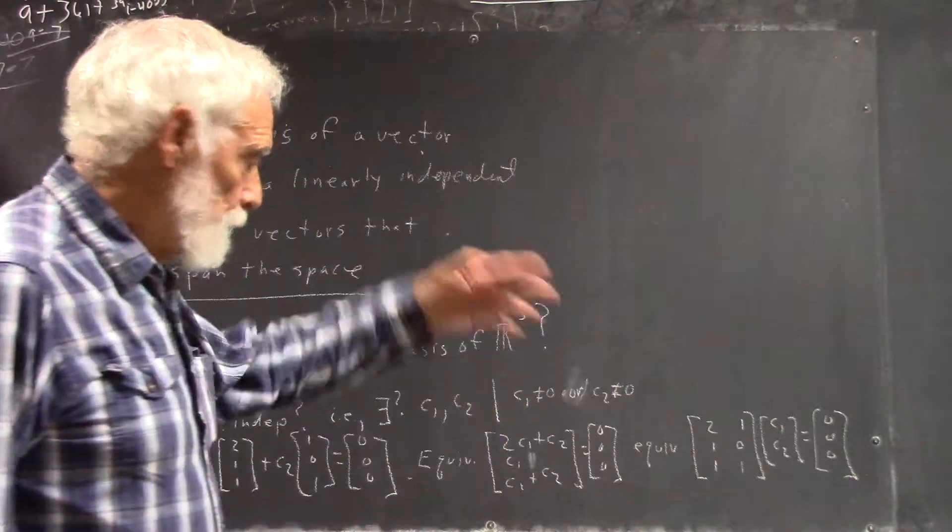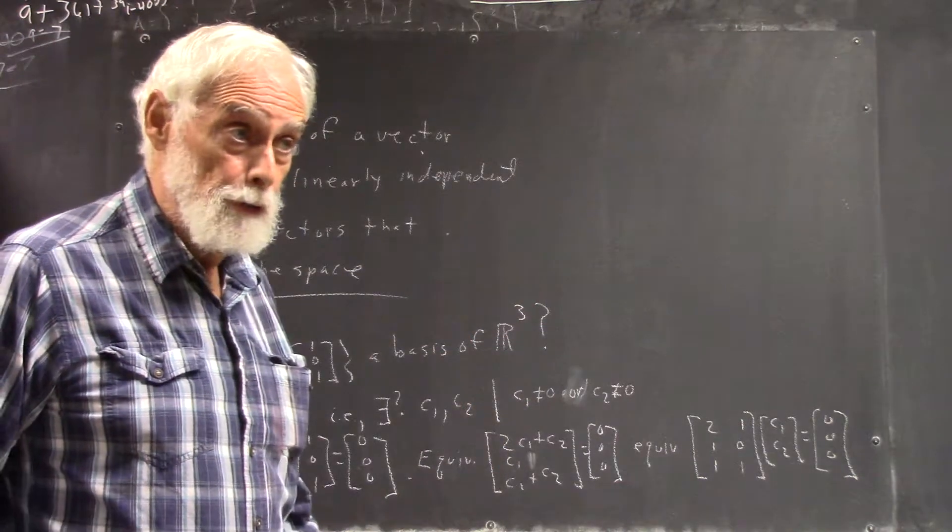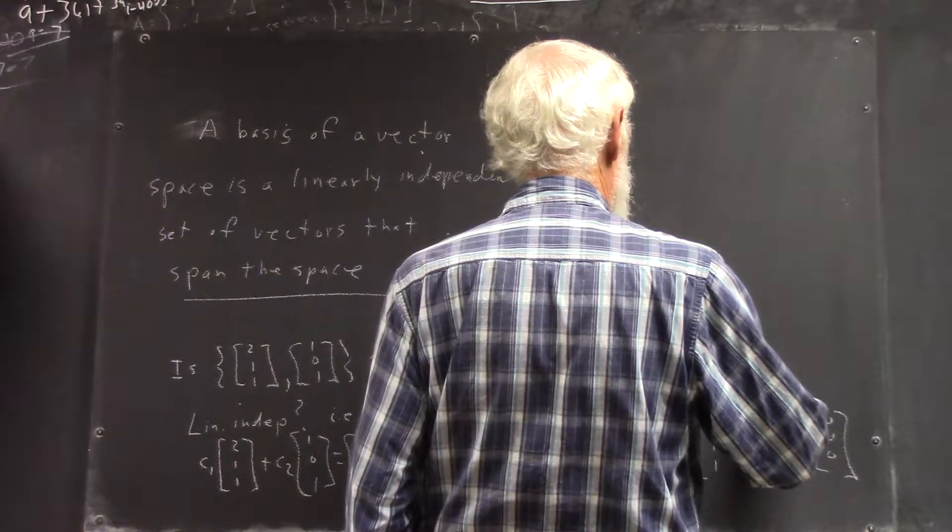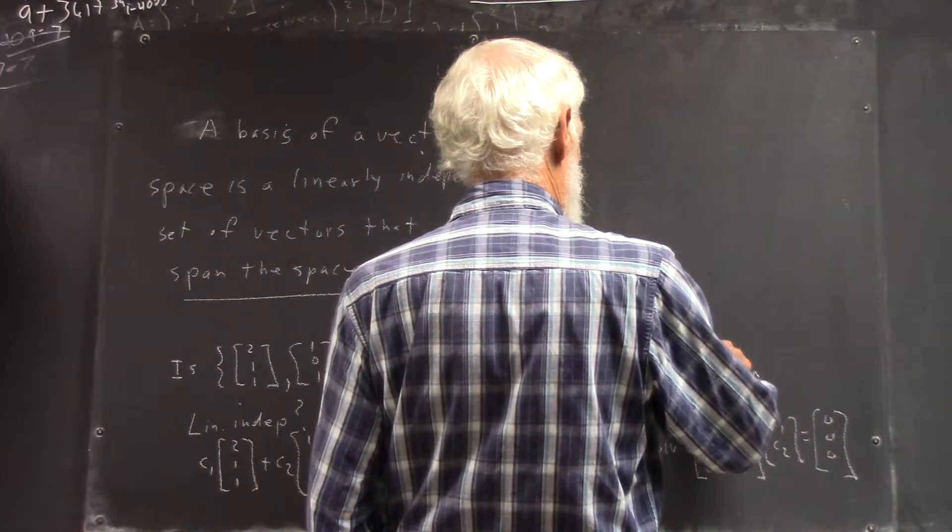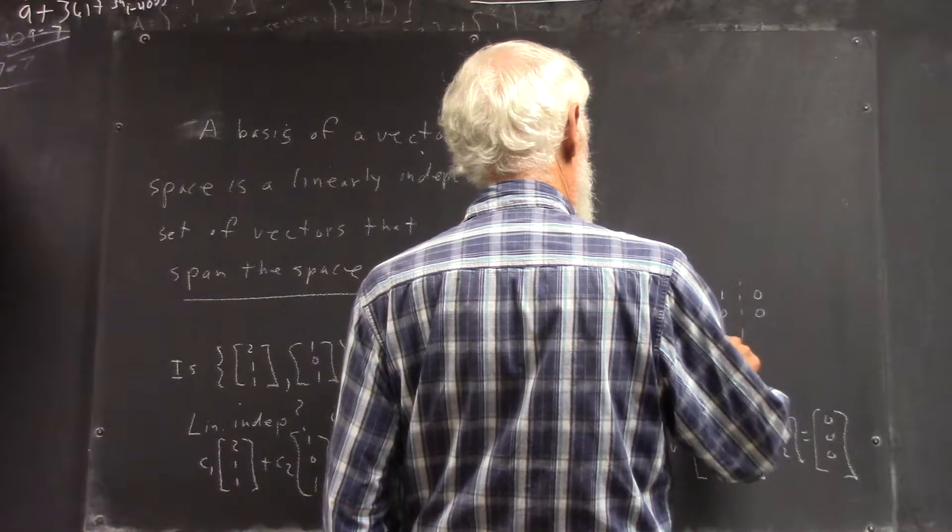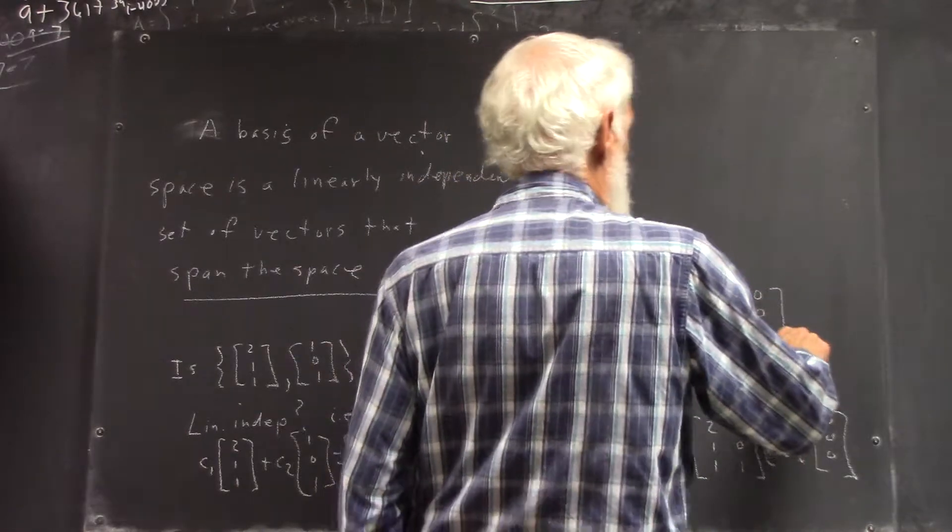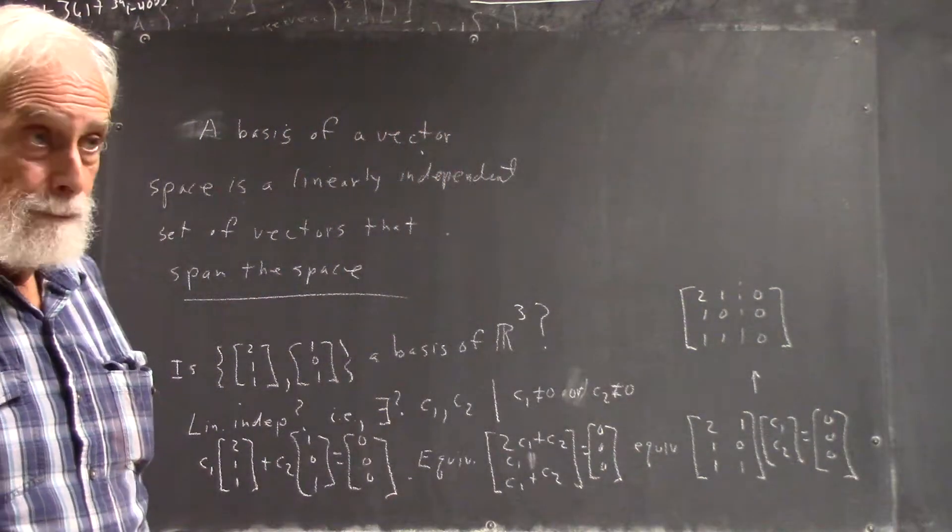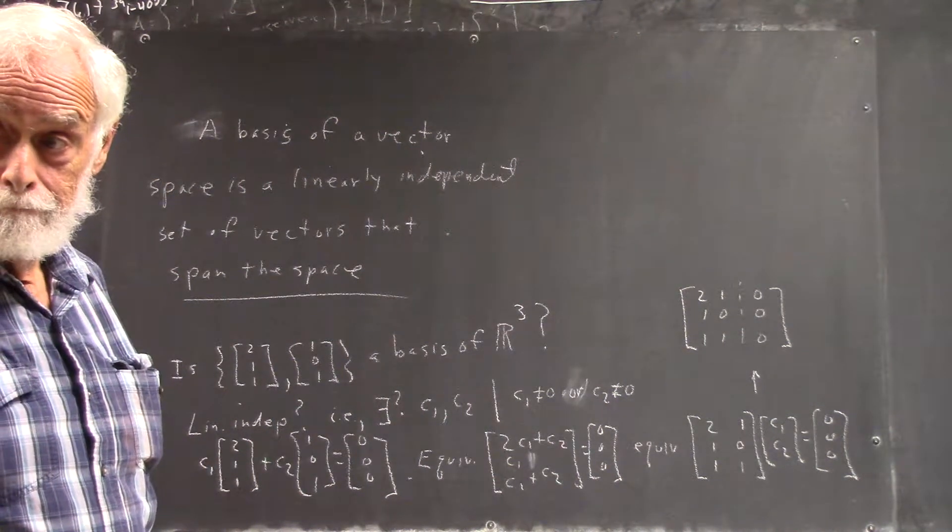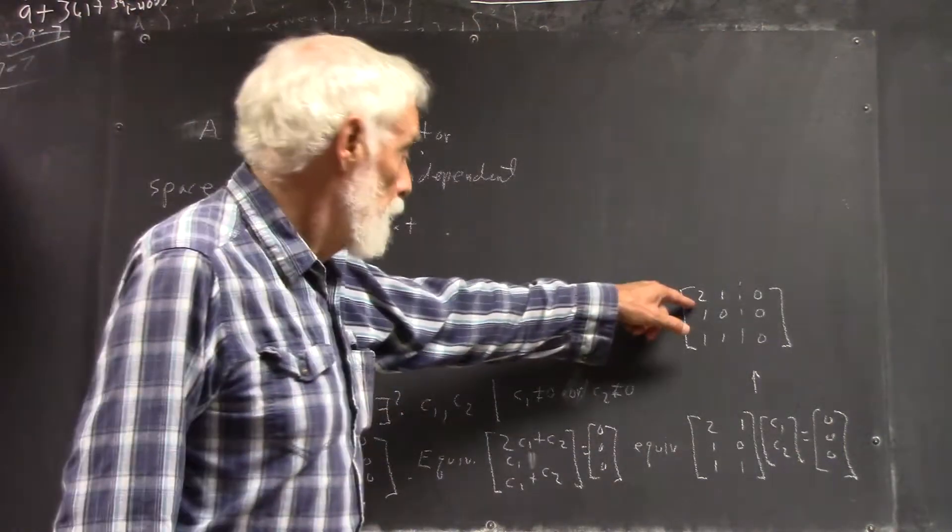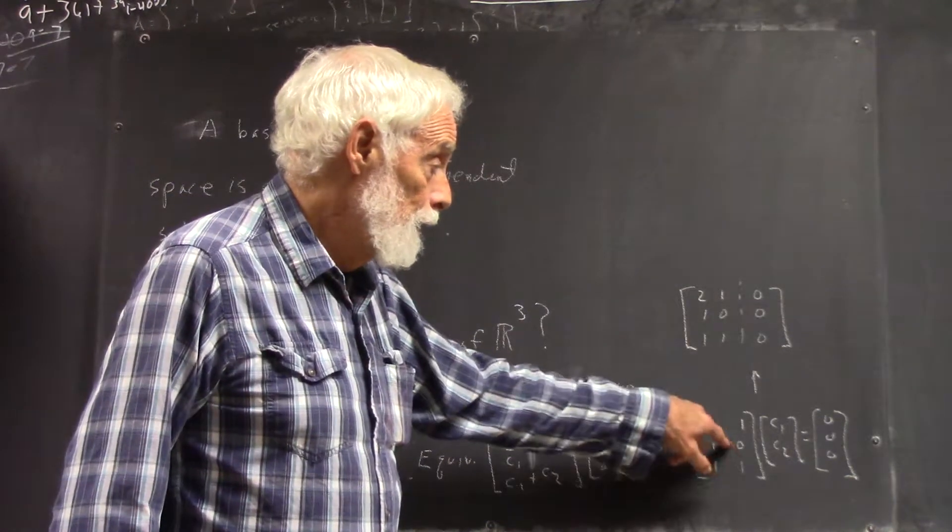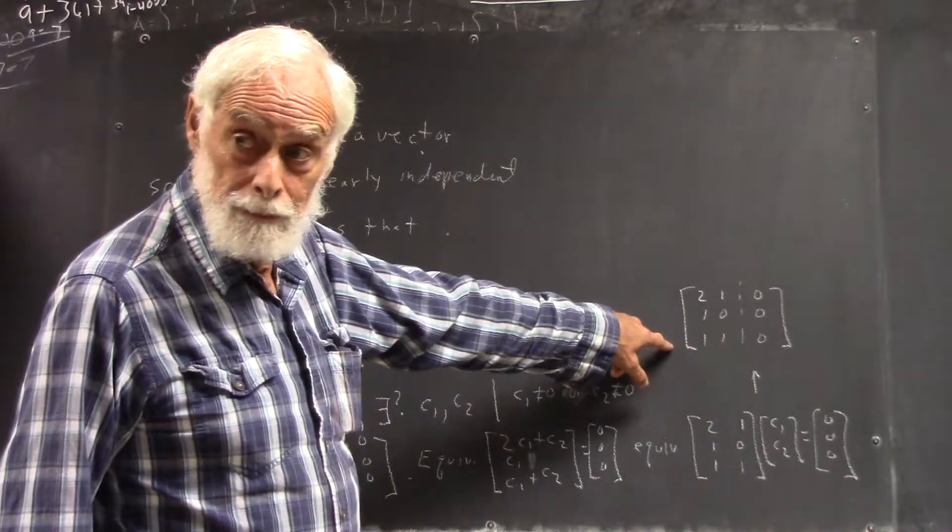Another way to write this is just a matrix equation, c1 and c2, right? And this is equivalent to the matrix equation 2, 1, 0, 1, 0, 1, 1, 0. Make sense? This is how you write this system of simultaneous equations. You write it this way, it's a matrix product, and then you write it this way.